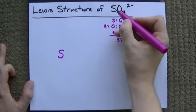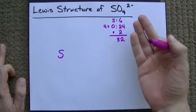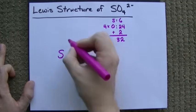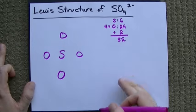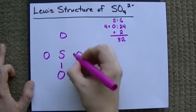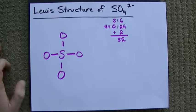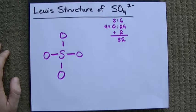Sulfur will go in the center because it is the atom here with the lowest electronegativity. Generally, the atom with the lowest electronegativity will go in the center. And we'll put the 4 oxygens around it. When I'm drawing Lewis structures, I like to create a single bond between each of my atoms first. That accounts for 2, 4, 6, 8 electrons.